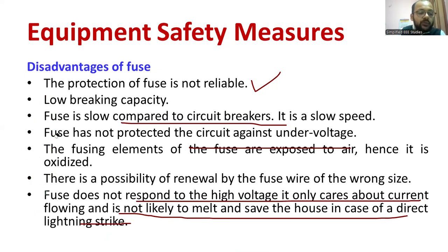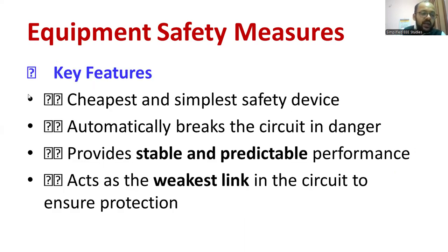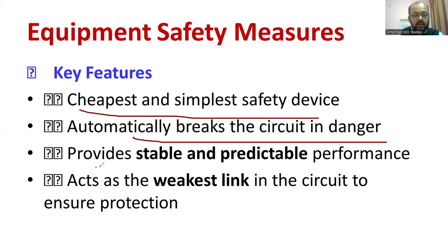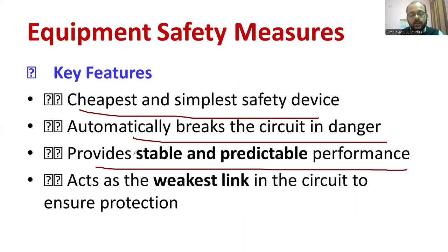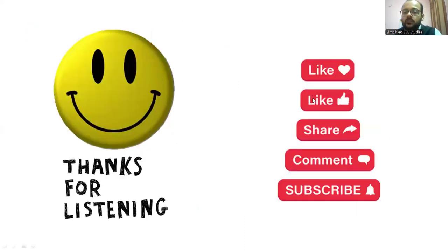These are the major drawbacks we need to consider before installing a fuse. There are pros and cons. To conclude: it is one of the cheapest and simplest safety devices. It automatically breaks the circuit during dangerous conditions and offers stable, predictable performance. However, it is not always reliable, and while selecting the size you should be very careful. For delicate instruments, we should not use a fuse. To overcome these limitations, we use a circuit breaker, which makes and breaks the circuit.